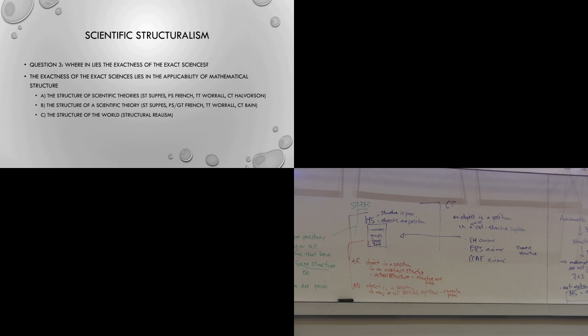Wherein lies the exactness of the exact sciences? When we attempt to answer this question, we have three components in philosophy of science. We could look at the structure of a scientific theory — Suppes has done that with set theory, more in particular with non-well-founded set theory. Stephen French has done it with what he calls a partial structures approach. Worrell uses type theory. More recently, Hans Halverson is using category theory to talk about the structure of scientific theories.